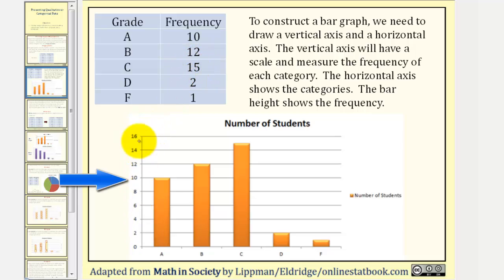The horizontal axis shows the categories. Again, here we see the letter grades, and the bar height shows the frequency. So for A, the frequency is 10. Notice how the bar has a height of 10.